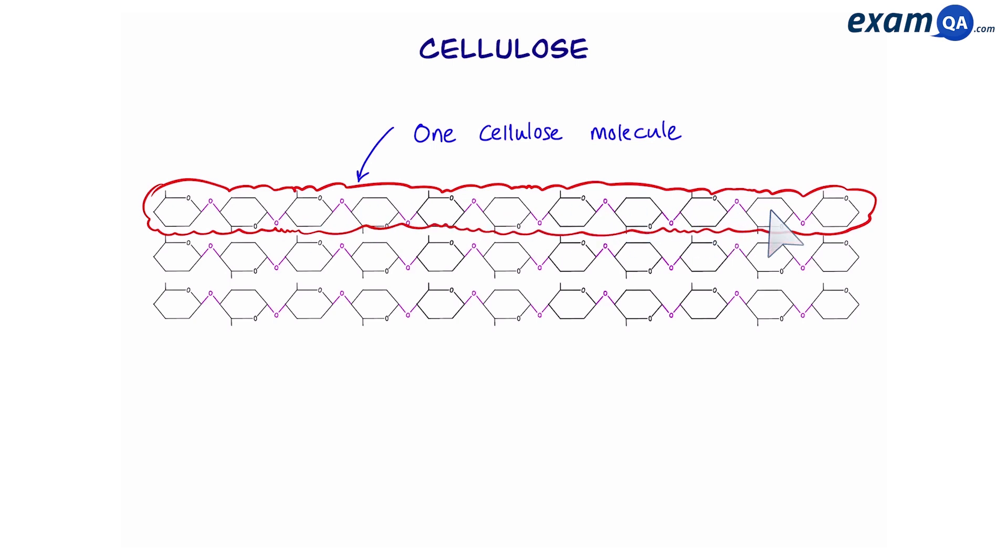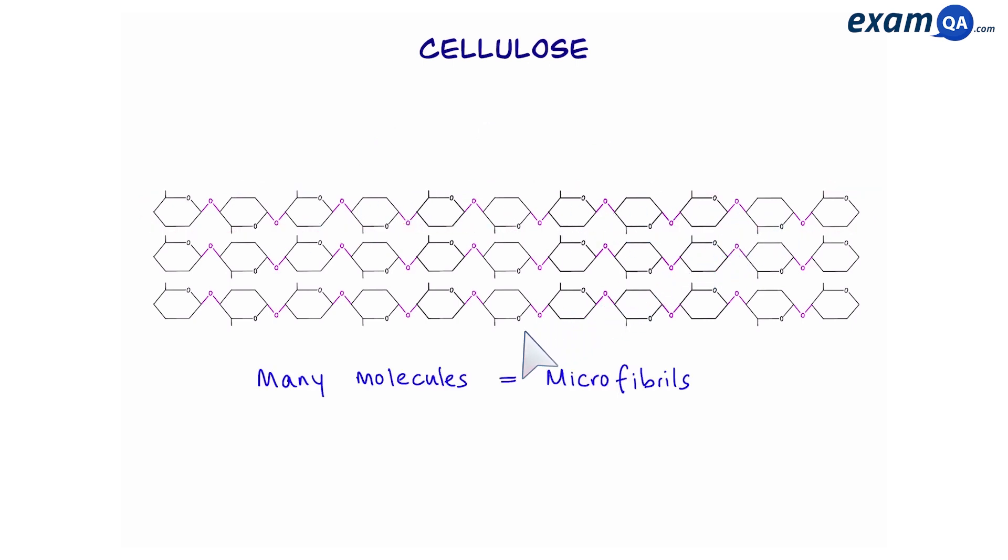However, we can see that here, we have many molecules joined together, and this is called a microfibril. Now, what's joining them is many hydrogen bonds, which form cross-links, and this is what gives the cell wall strength and rigidity.